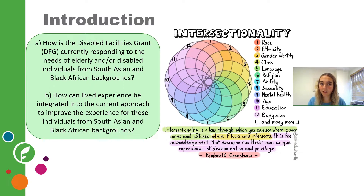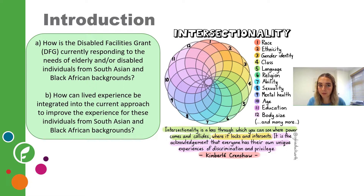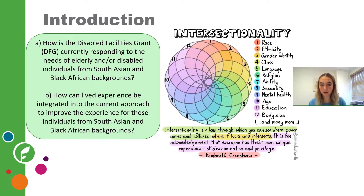To investigate this I used intersectionality as a tool and a method. As the diagram on this slide shows, intersectionality understands identities such as gender, race, class and ability as interconnected and reflective of social structures of oppression and privilege. Intersectionality aims to translate this theoretical knowledge into practical responses to oppression, focusing on experiences of oppression to understand how to minimize and eradicate them.